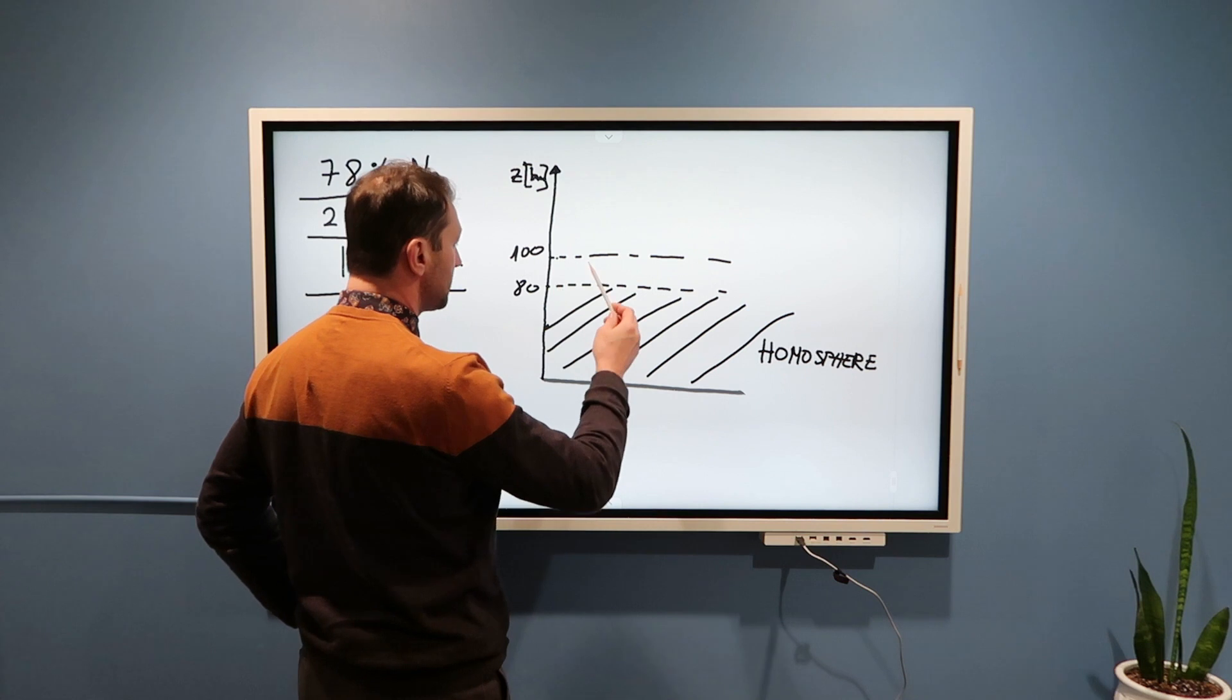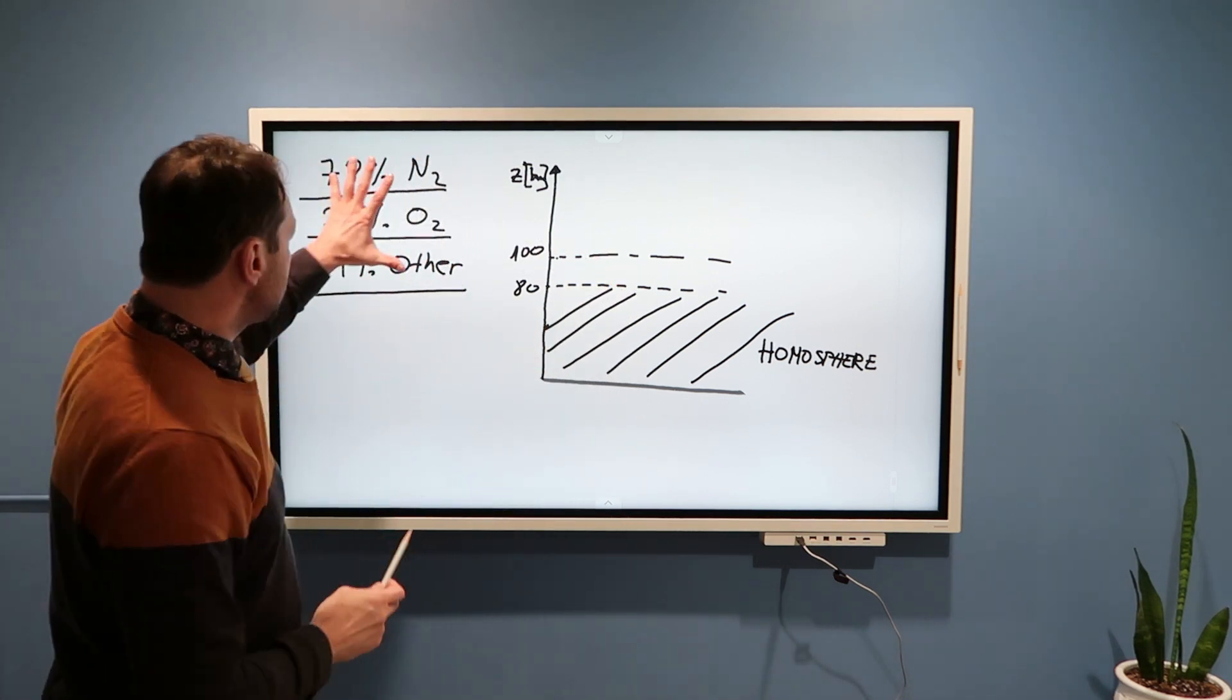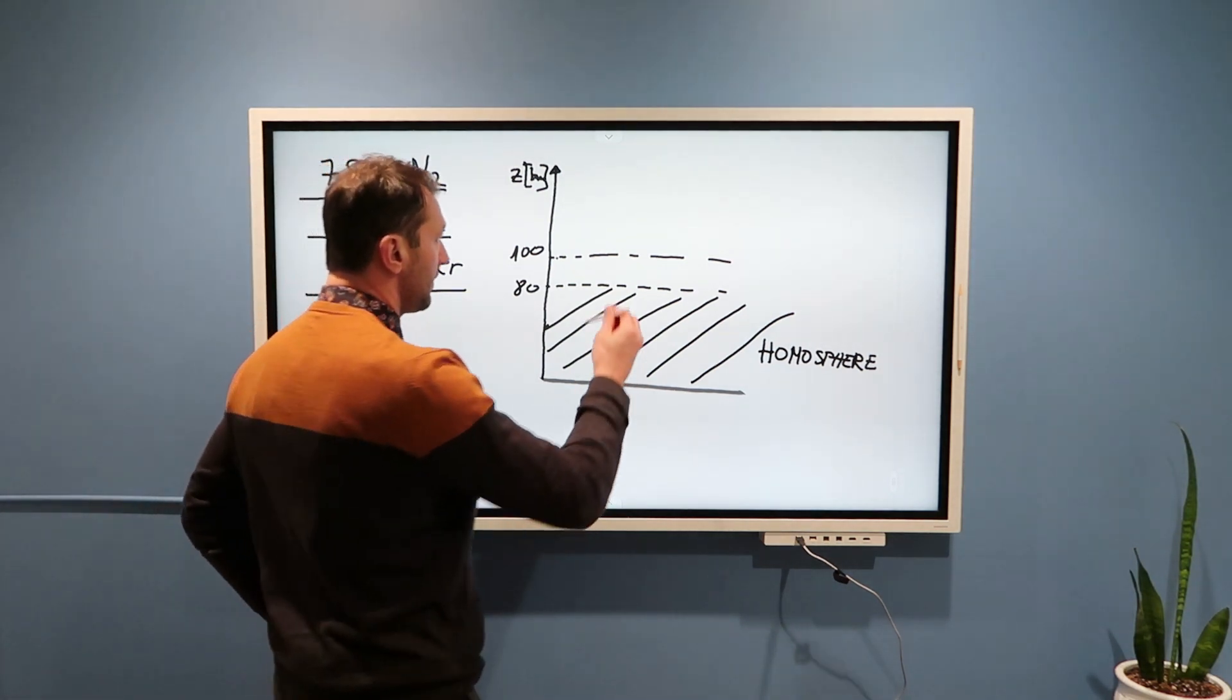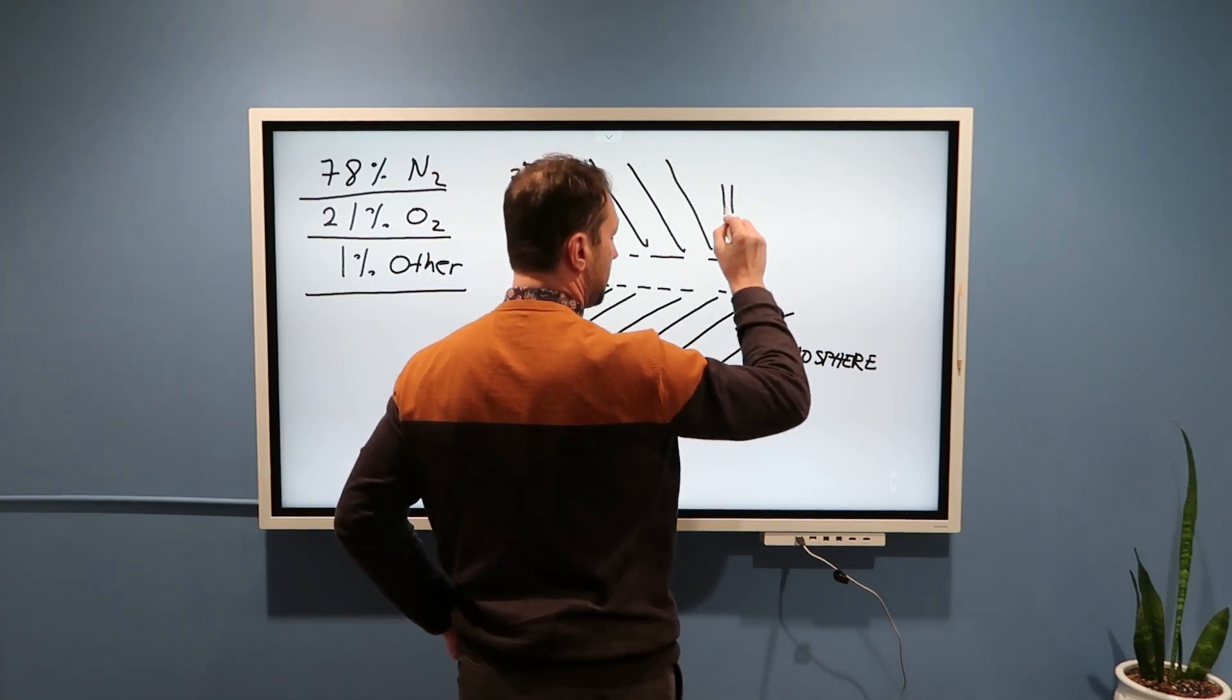Above approximately 80 to 100 kilometers, these percentages do not apply anymore. And this part of the atmosphere is known as heterosphere.